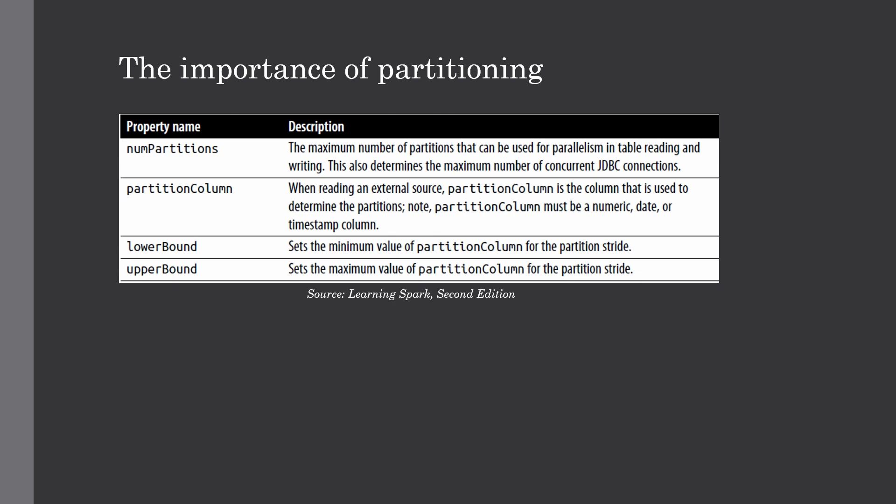The second hint: calculate lower bound and upper bound based on actual minimum and maximum partition column values. For example, if num_partitions is 10 but all values fall between 2000 and 4000, only 2 of the 10 queries will do all the work. The third hint: choose a partition column that is uniformly distributed. If most values cluster at 5500 with num_partitions of 10 and bounds of 1000–10000, most work falls on the single task covering 5000–6000. Consider choosing a different column or generating a new one.